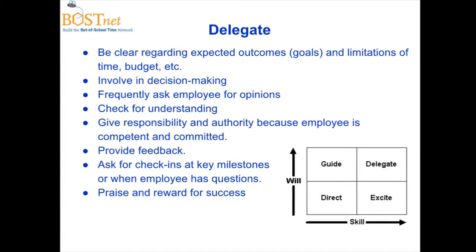If someone has high will and really high skill, move to the delegate section. You're still being clear about expected outcomes, but you're going to involve them a lot in decision-making, ask for their opinions, and give them a lot of responsibility. It's important to still provide feedback — people can always grow. You might say: 'I am amazed with how you've created such a culture of positive behavior here. I see you validating children's efforts. I'd love to see how we can work more on stopping those big issues before they escalate.' Always look for that next piece they can grow, and praise and reward for their successes.